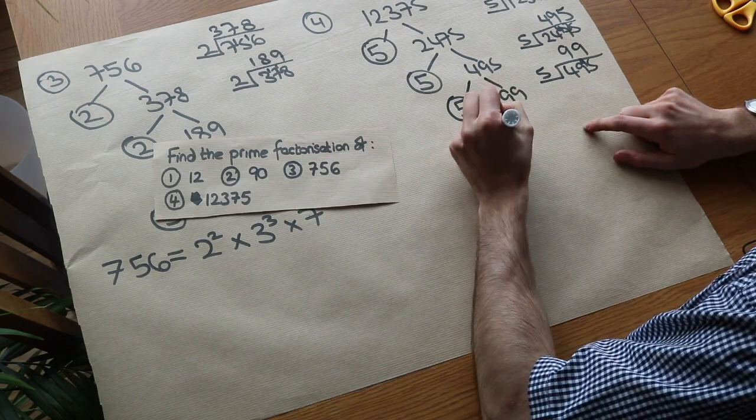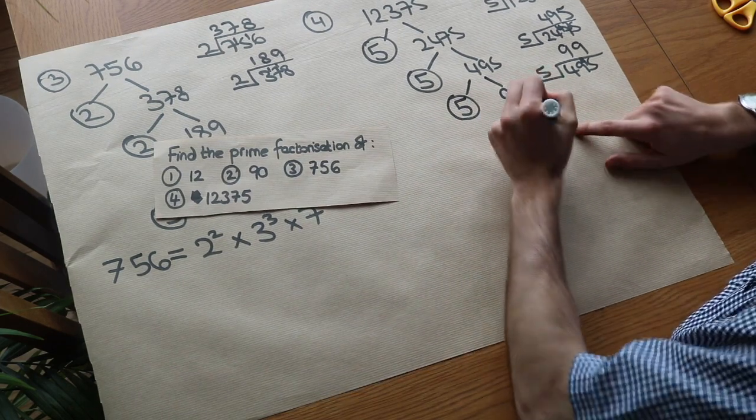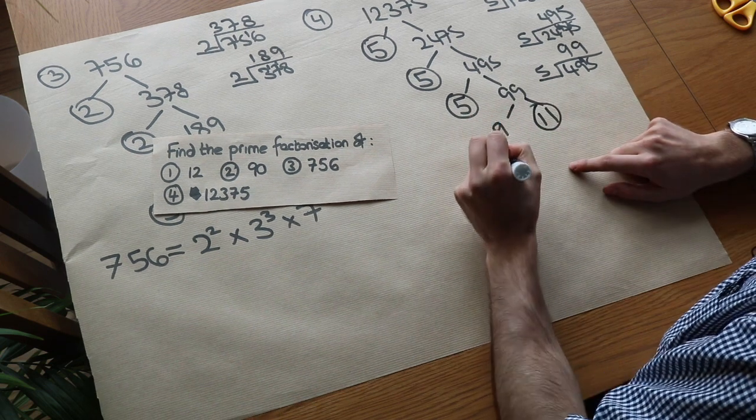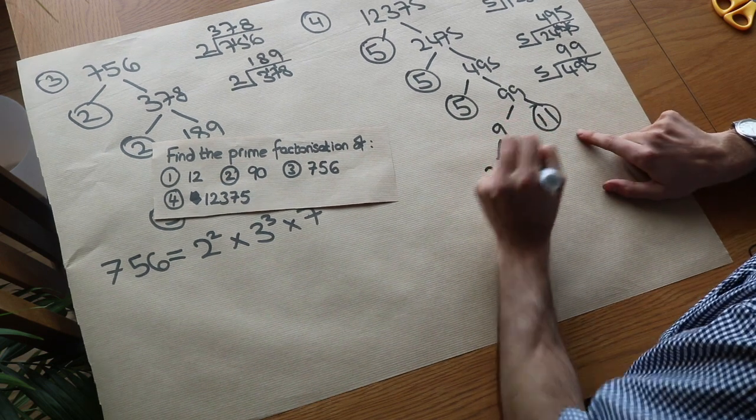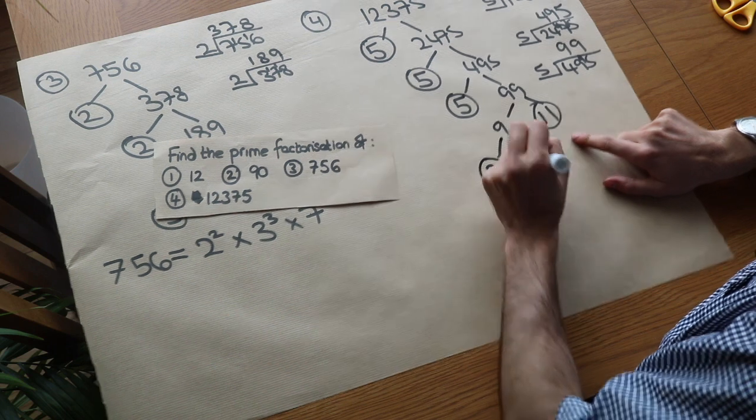Well, 99 is 9 times 11. 11 is prime, but 9 is not. 9 can be written as 3 times 3, which are both prime. So we are done.